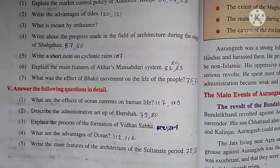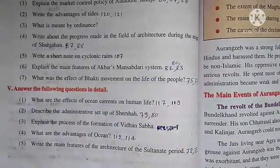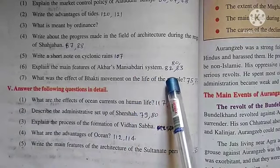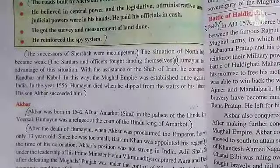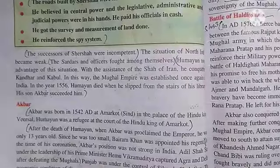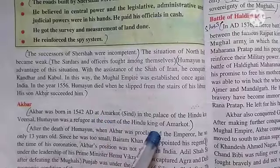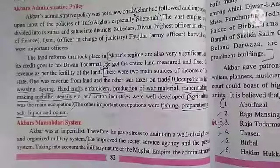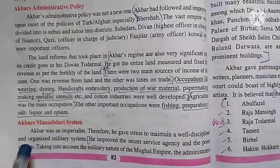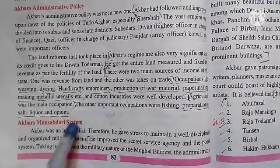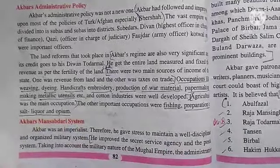Next question: Explain the major features of Akbar's Mansabdari system. This answer is in page number 80, 82, and 83. First, write a little bit about Akbar — Akbar was born in 1542 AD. Then in page number 82 there is Akbar's Mansabdari system — you will start there, and continue to page number 83 where somewhere salary was paid in cash.